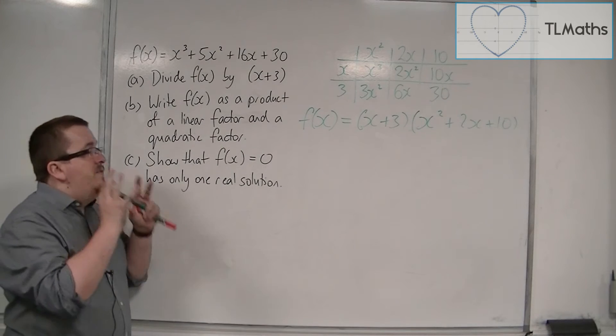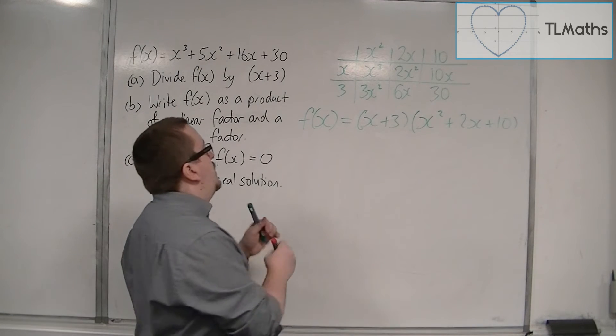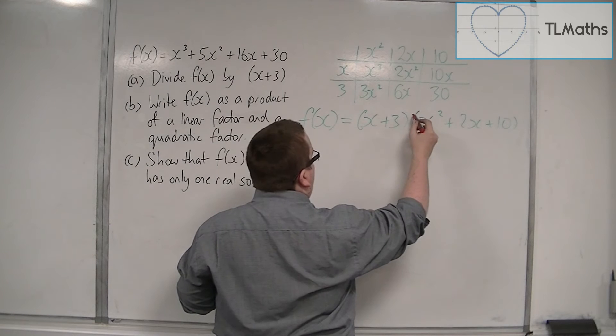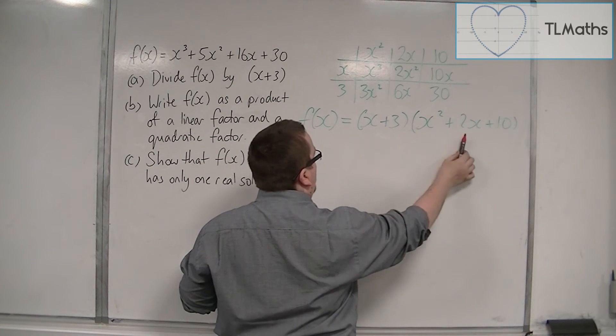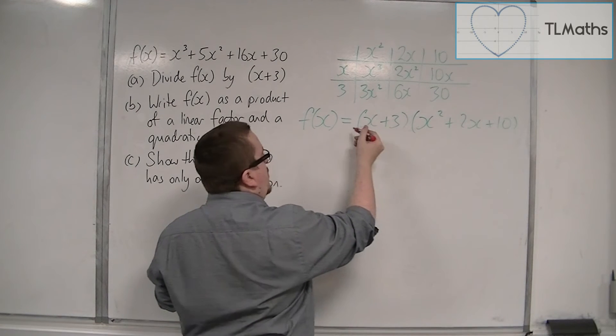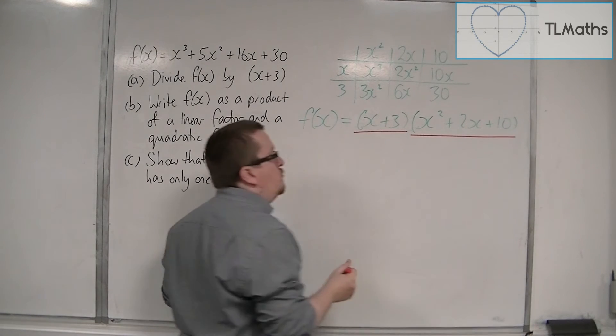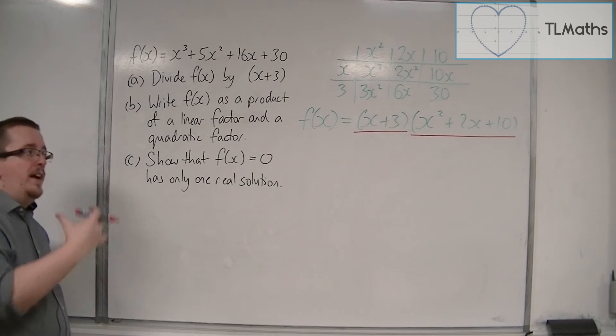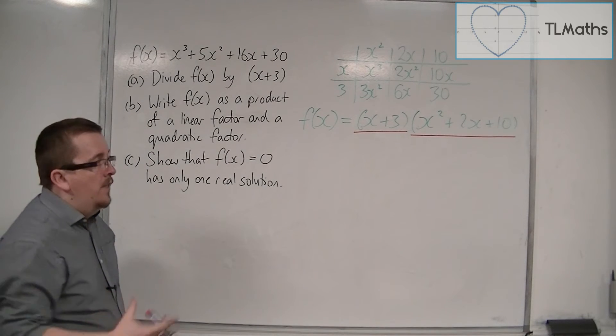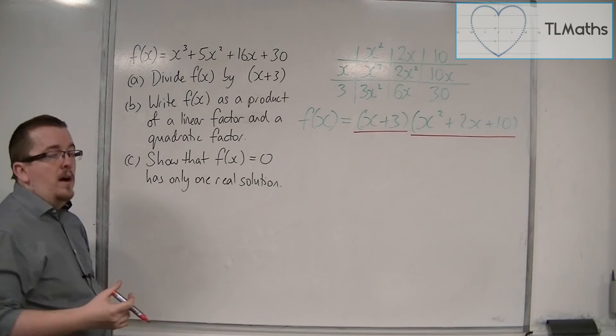So I've now written the cubic as a product - two things multiplied together - the product of a linear factor and a quadratic factor. That's what was required in part B.